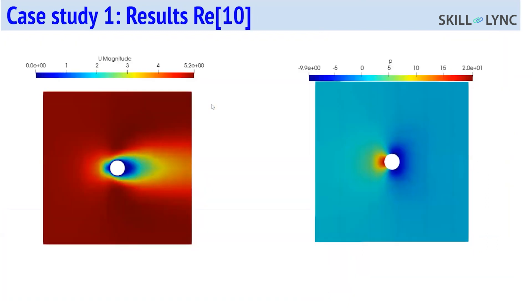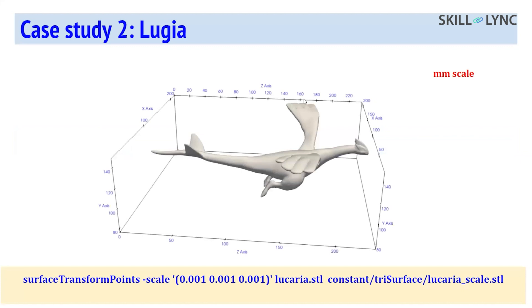For the second case, inspired by recent Pokémon series hype, we'll simulate flow over the legendary Pokémon Lugia. This is interesting because it teaches several additional utilities in cfMesh with a more complex geometry.